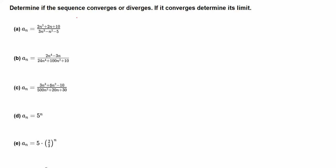Determine if the sequence converges or diverges; if it converges, determine its limit. For this sequence with the general term a_n, we find the limit of this generic term when n goes to infinity of 2n² + 2n + 10 over 3n³ − n² − 5.